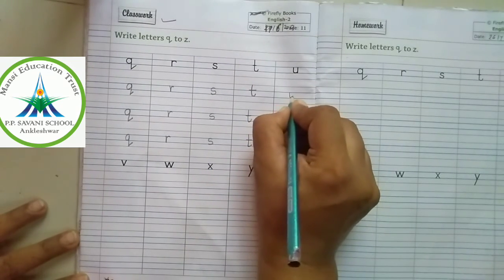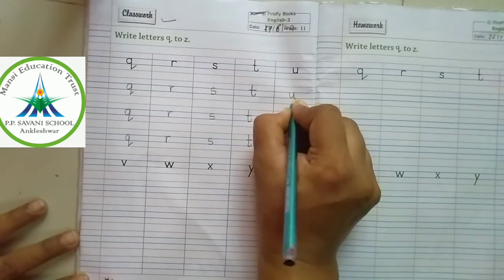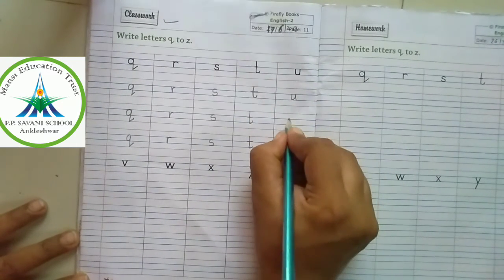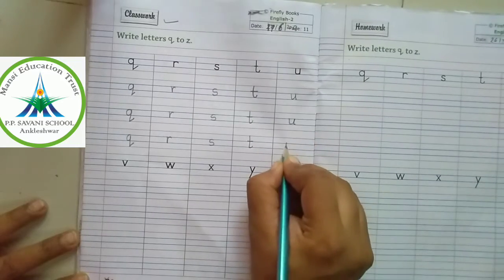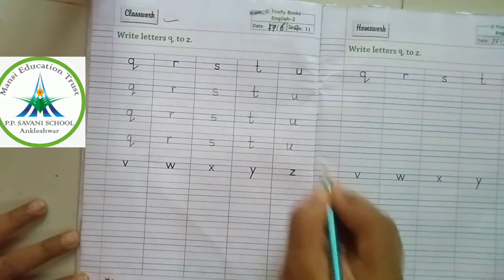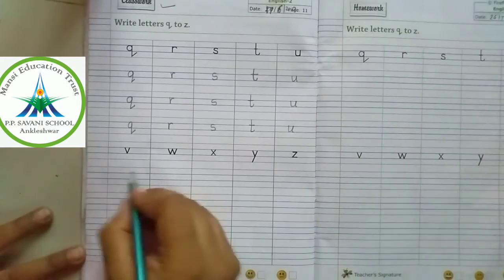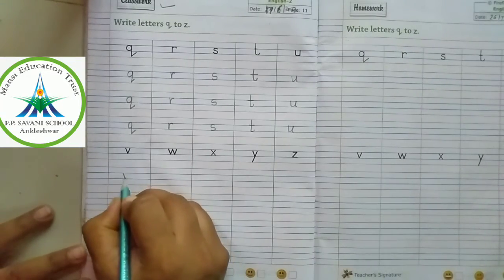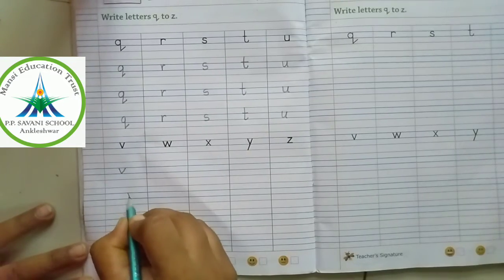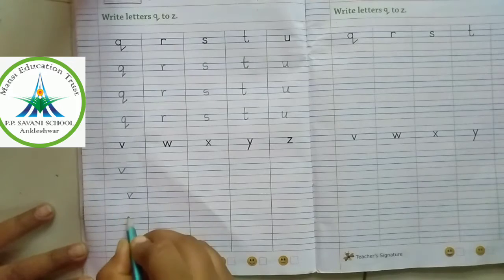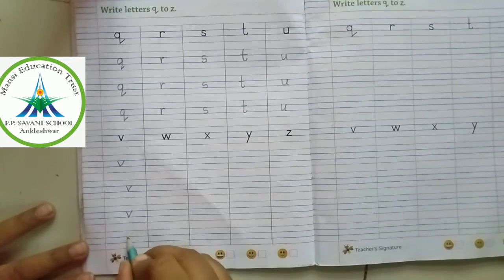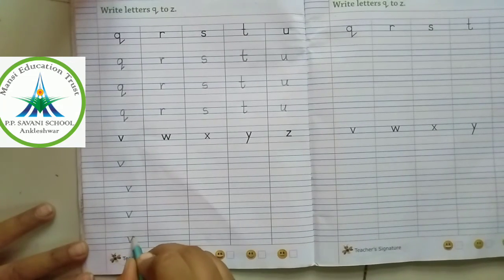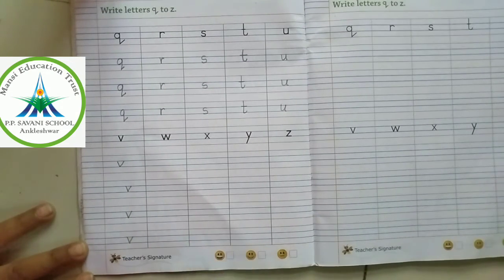U between two blue lines. U, U, U. V between two blue lines. V, V, V.